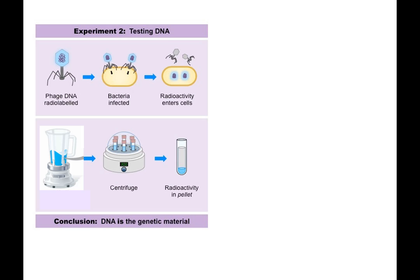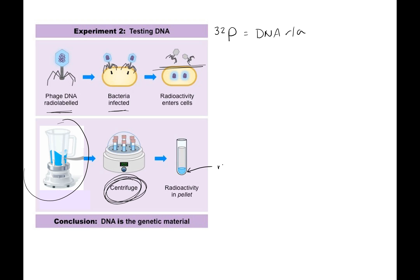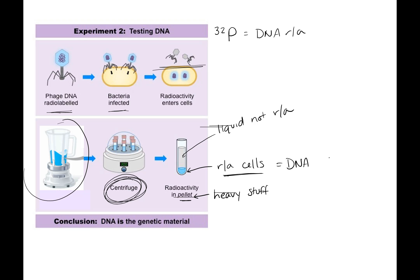In the reverse experiment, they used radioactive phosphorus so the DNA was radioactive. They made radioactive viruses, infected bacteria, used the blender to knock off the viruses, and spun them down. The radioactivity was found in the cells — the pellet — not in the liquid. This showed that viruses were injecting their DNA into the cells to make more virus, confirming DNA as the genetic material.